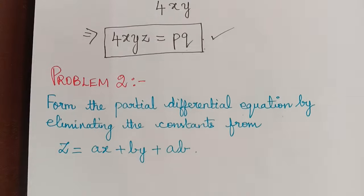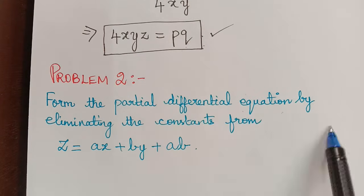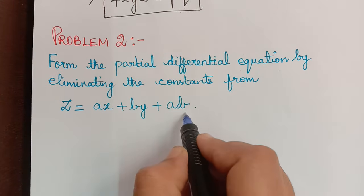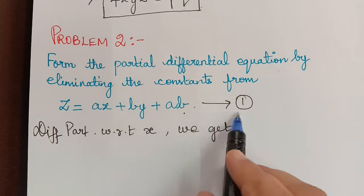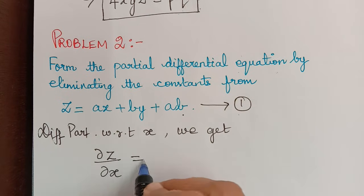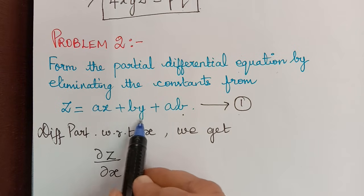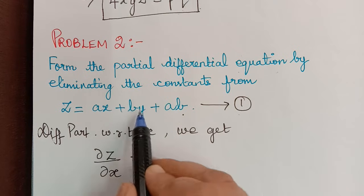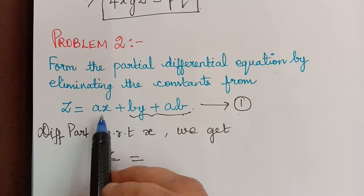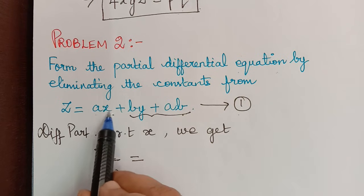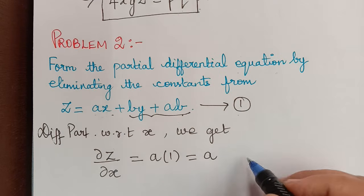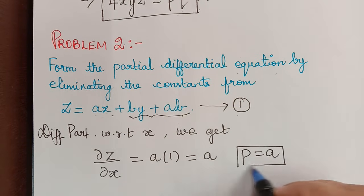We shall now solve another problem: form the partial differential equation by eliminating the constants from the given equation. Let this be equation 1. As the first step, we partially differentiate with respect to x. Here, the term (by + ab) is constant with respect to x, so it differentiates to 0. Differentiating ax with respect to x gives a. Since ∂z/∂x = p, we have p = a. Let this be equation 2.